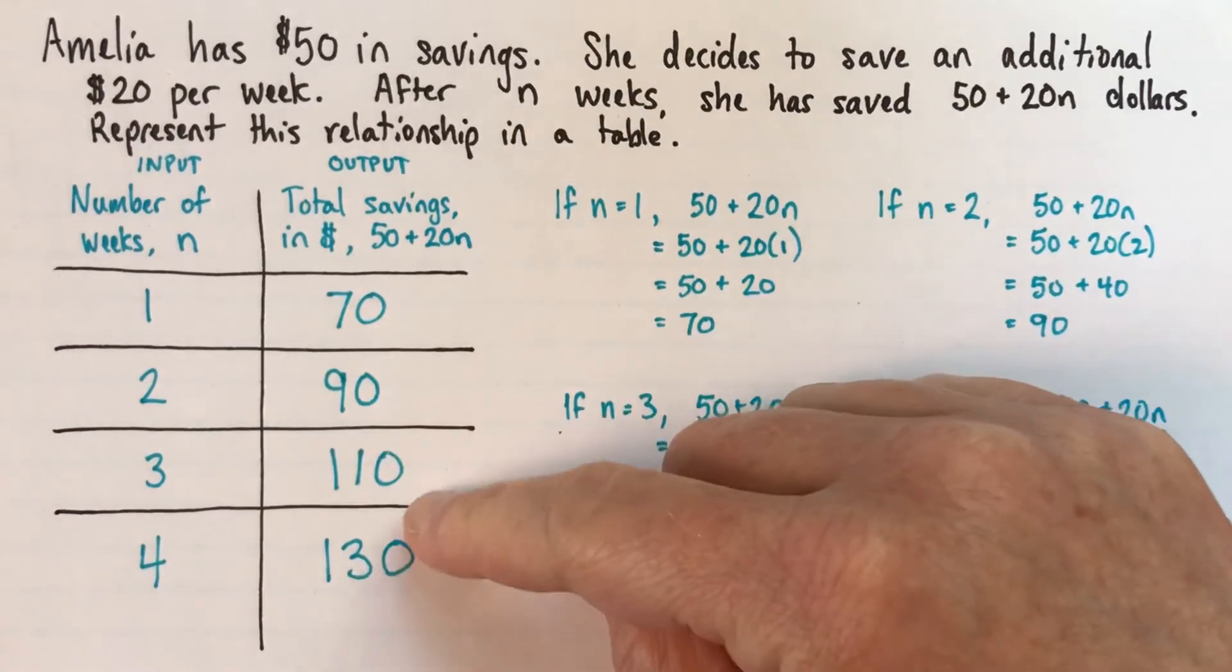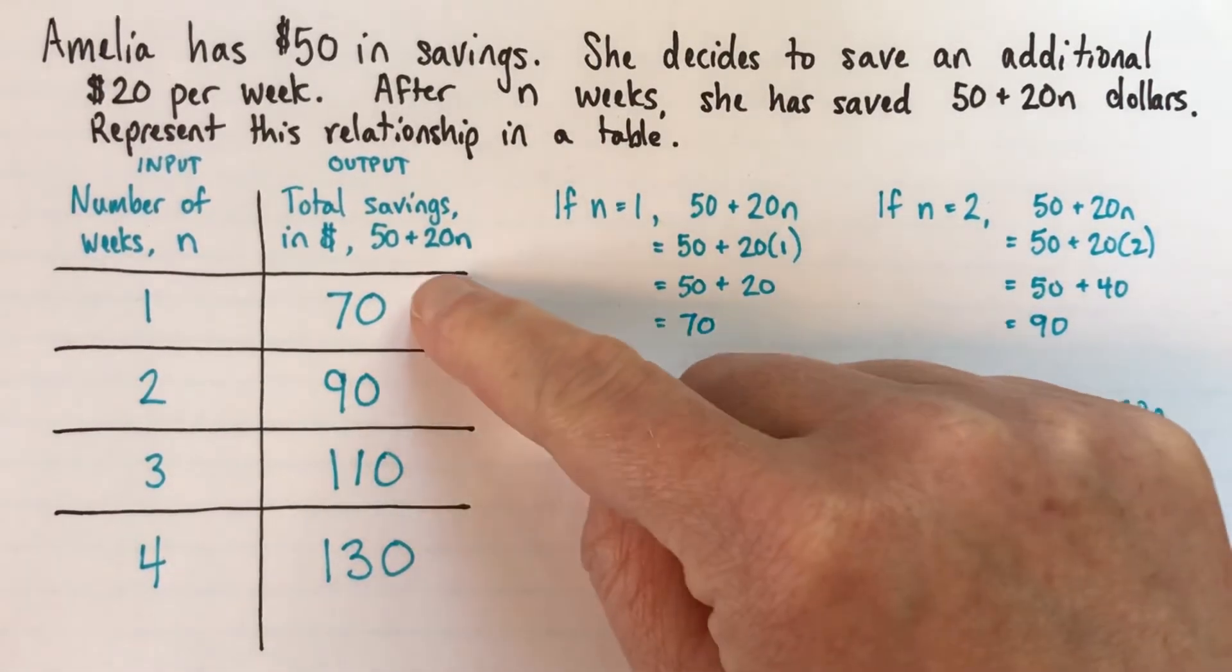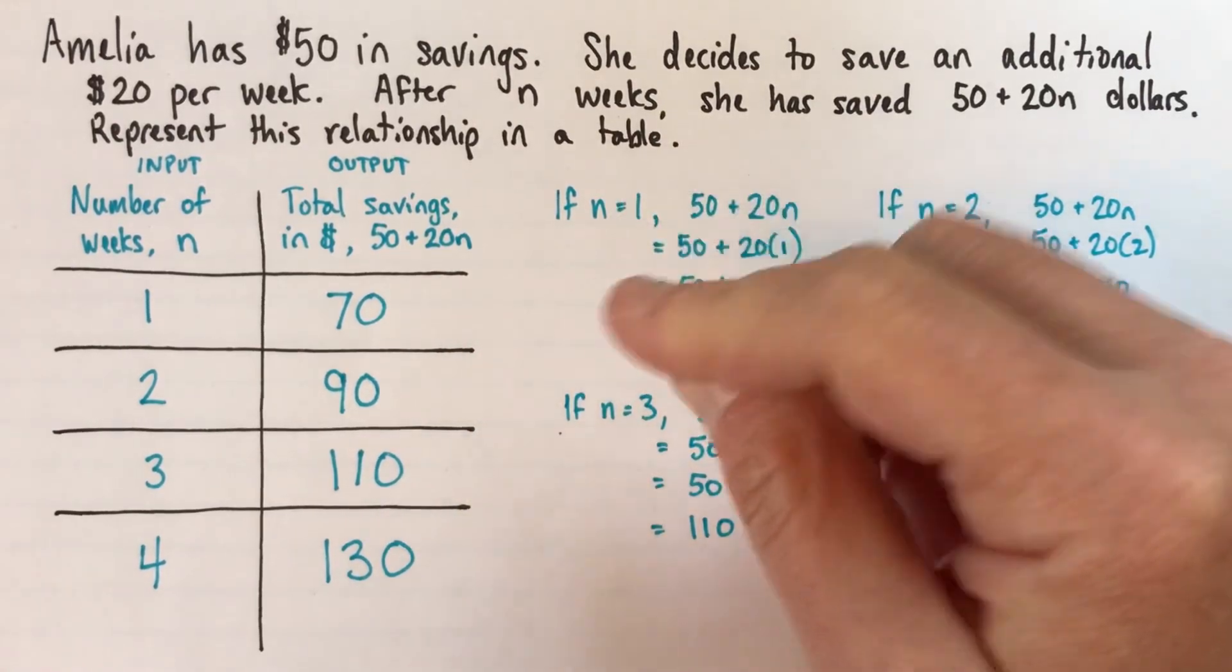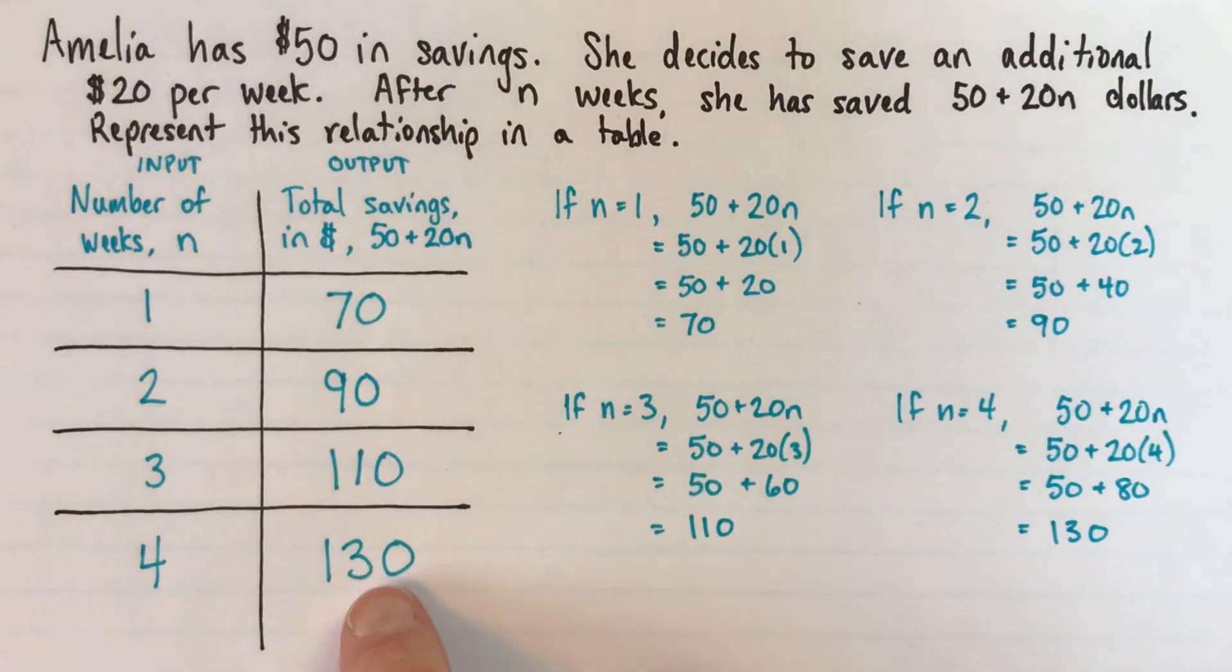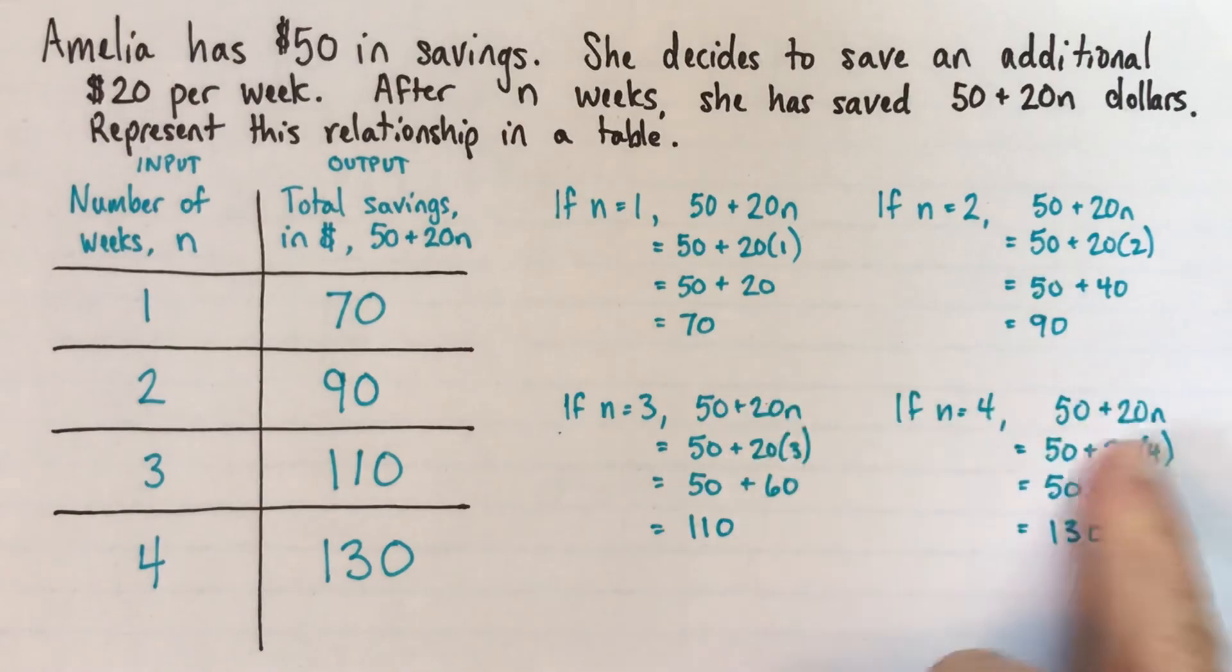So you should always just go back and look for patterns in your table. Because sometimes you'll see, oh yes, plus 20, plus 20, and then you'll have one spot that just goes plus 10, and you think, oh. And then if that happens, just double check the value, whichever value seems a little bit off, just to make sure that you did your calculations right.